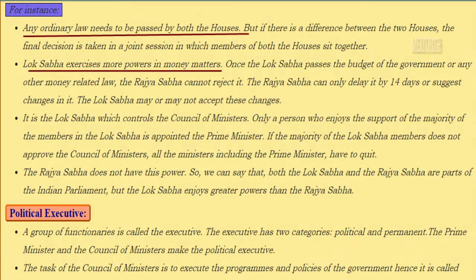Any ordinary law needs to be passed by both houses. But if there is a difference between the two houses, the final decision is taken in a joint session in which members of both houses sit together. Lok Sabha exercises more power in money matters. Once Lok Sabha passes the budget or any other money-related law, Rajya Sabha cannot reject it. Rajya Sabha can only delay it by 14 days or suggest changes.